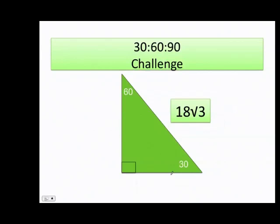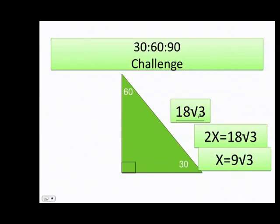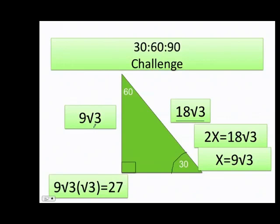Now they give me the hypotenuse, and as you can see it contains a radical. Not a problem. Remember the ratio is always x, x√3, 2x. So I set the hypotenuse equal to 2x, then divide both sides by 2 to get 9. The value of x is 9 times the square root of 3. For the 60-degree side, remember it's x times √3; since x is 9√3, multiplying by √3 gives me 27.